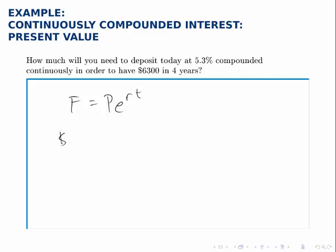So the future value we are given is $6,300, P is unknown, R is 5.3%, so 0.053, and T is 4 because we are planning for four years.